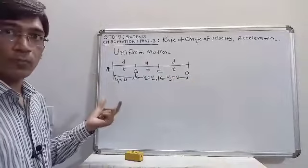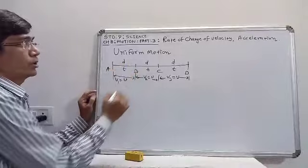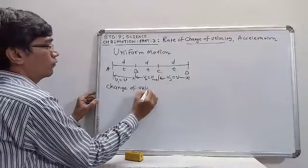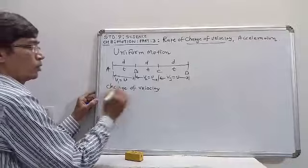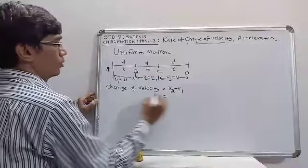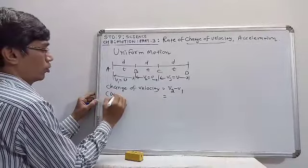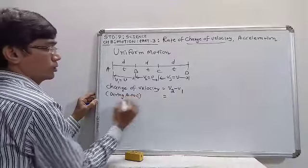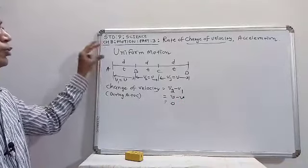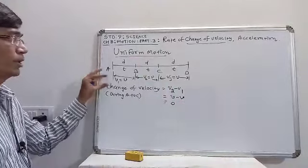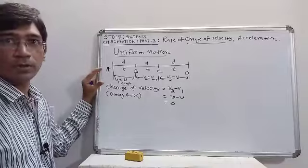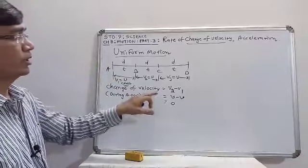If you take the change of velocity — for example, V2 minus V1 during A to C — it is V minus V, which equals 0. So in uniform motion, the velocity is constant, and the change of velocity is 0.